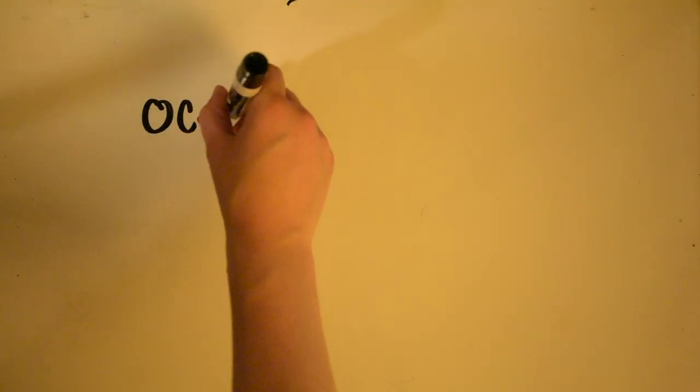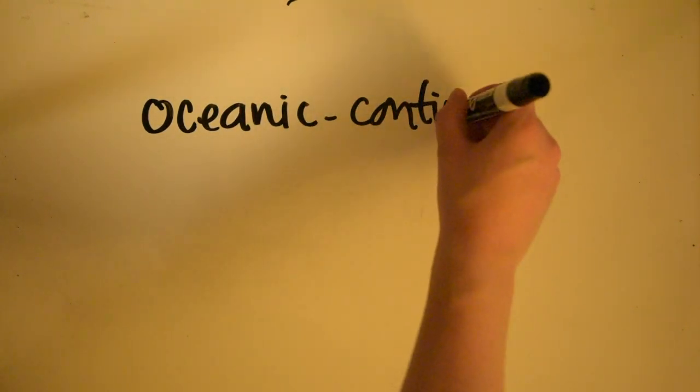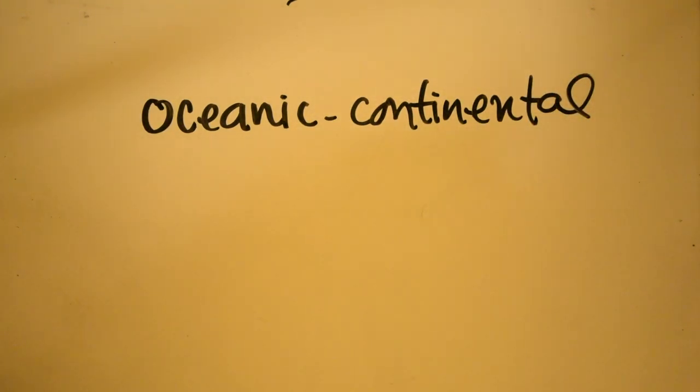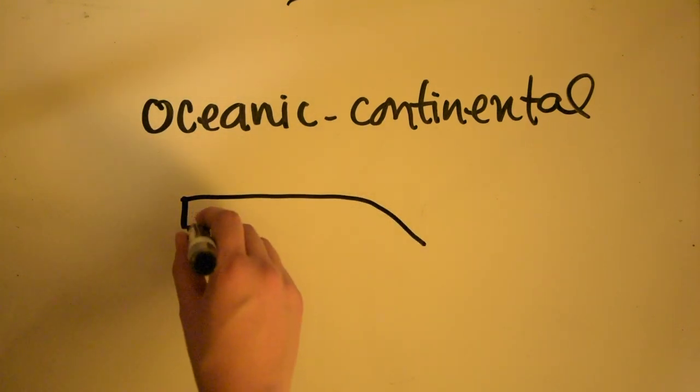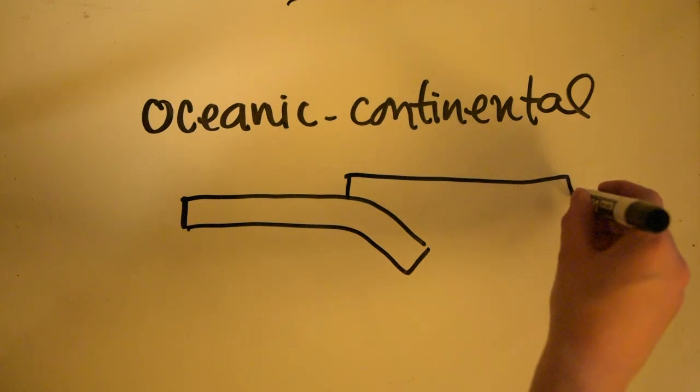The second example here that we're going to talk about is the oceanic-continental. This is the same exact idea as the oceanic-oceanic, except that the oceanic piece of crust here gets subducted underneath a piece of the continental crust.